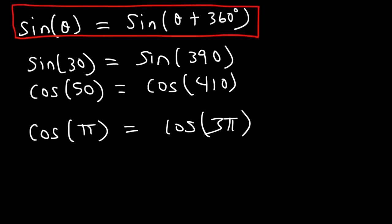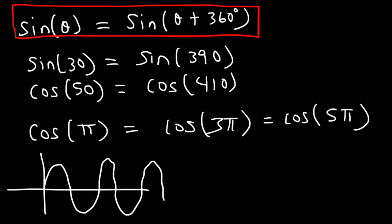So the word periodic means things that repeat. If I add another 2 pi and get 5 pi, cosine 5 pi will equal all of these values. When you graph the sine and cosine functions, this is the graph of sine. It repeats itself over and over. So the value will be the same if you keep adding 360 to the angle.